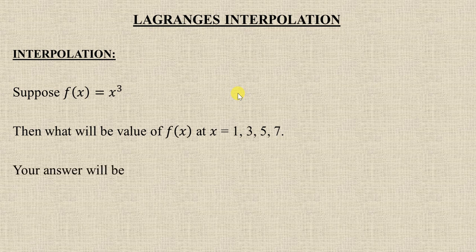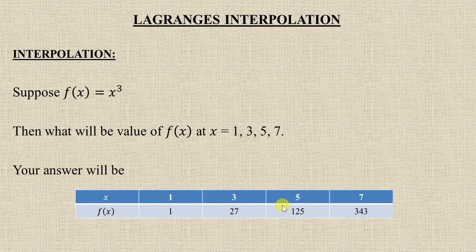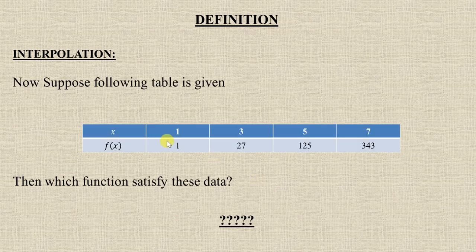Your answer will be this. Here you have the function value given and you found the data for different values of x. But if I ask the reverse - you have the data and you need to find the polynomial function which satisfies this data - this is the concept of interpolation. The problem of interpolation is to find a polynomial function.